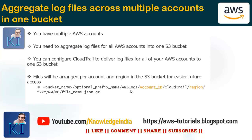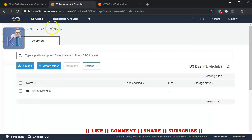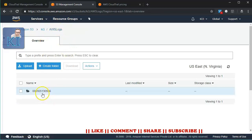We already saw that the way log files get placed into your S3 bucket, there will be a folder structure, and in the folder structure there is an account number. So when we actually try to bring the logs from different accounts into one S3 bucket, the account number will be different. In that particular bucket, if I bring logs from different accounts, at that level there will be more folders created — we'll see that in a while by setting it up as well.